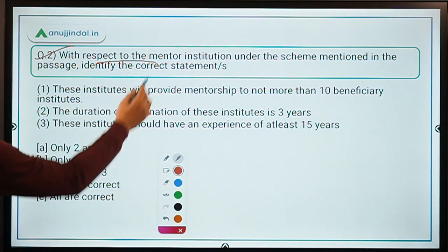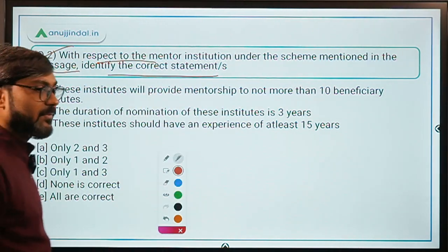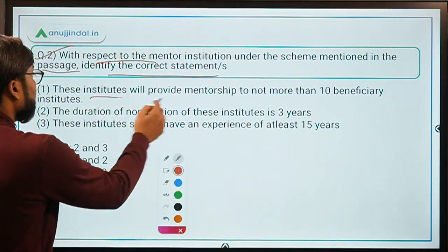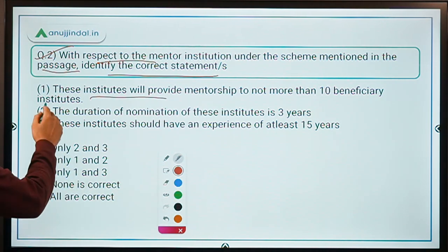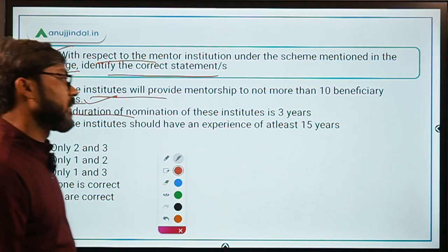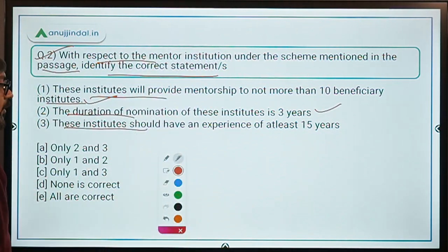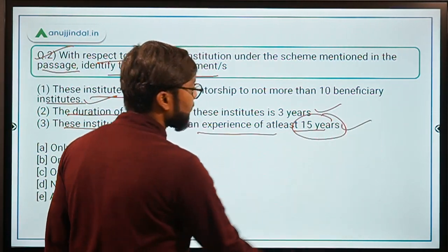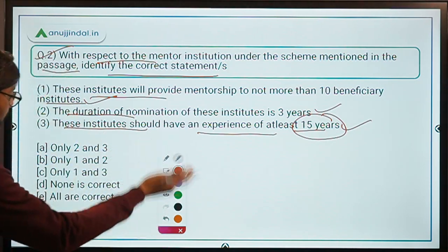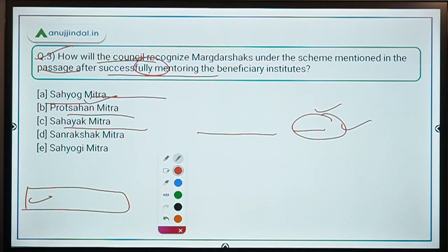Question number two: with respect to mentor institutions under the scheme, identify the correct statement. Statement one — these institutes will provide mentorship to not more than 10 beneficiary institutes — is correct. Statement two — the duration of nomination is three years — is correct. Statement three — they should have experience of at least 15 years — is also correct. So all statements are correct, meaning option E is the correct answer.